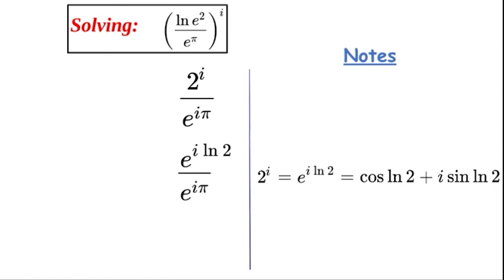Okay, so now we have e to the power of i ln 2 as the numerator. We can also go further and apply Euler's form format here, and we can bring in our actual values later on.